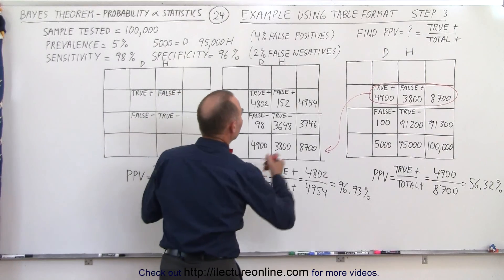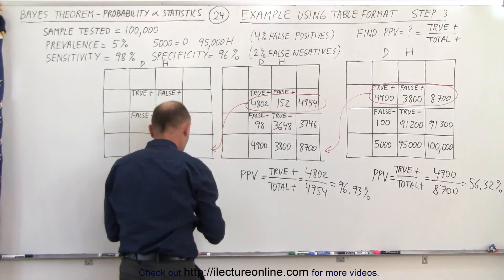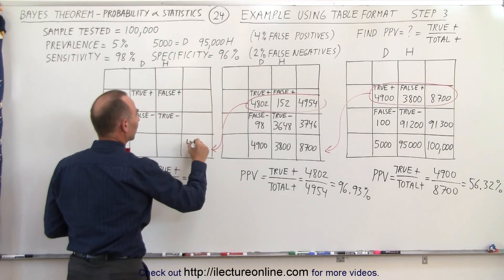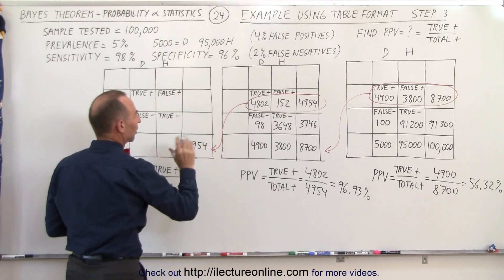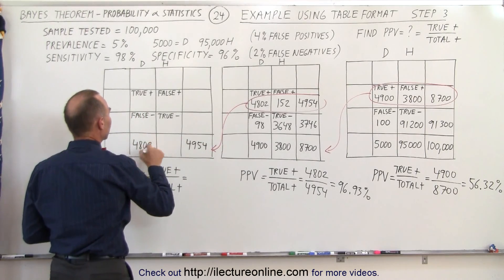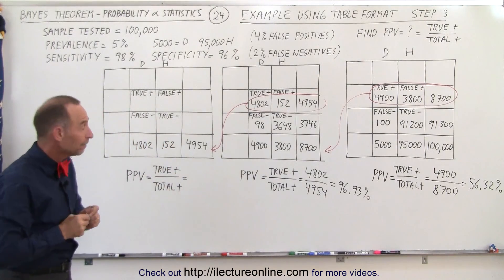So what we're going to do is take what's in this row right here and transfer it down here, and that now becomes our new sample. We have a total of 4,954 individuals that are going to be retested: 4,802 that truly have the disease, 152 that are healthy. So let's run this again.